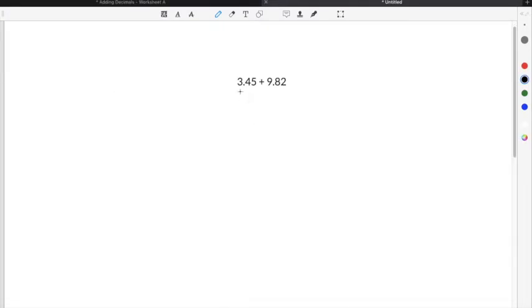When you add decimals you must place one number above the other number on your paper. So in the case of this example where we have 3.45 plus 9.82, I'm going to take the first number 3.45 and place it above 9.82. When you're adding decimals you must make sure the decimal point is lined up vertically.